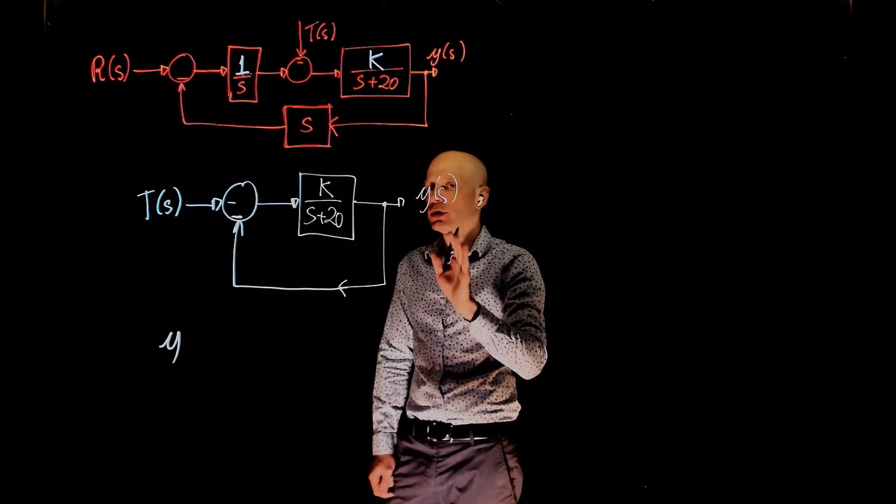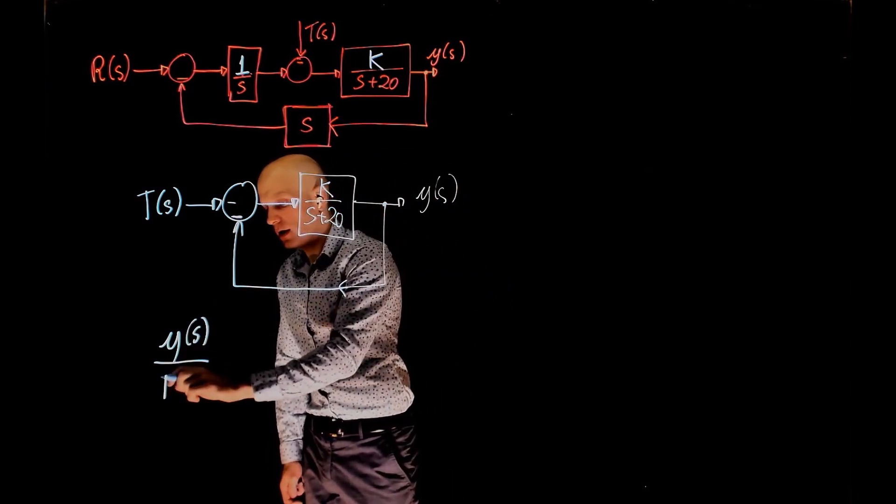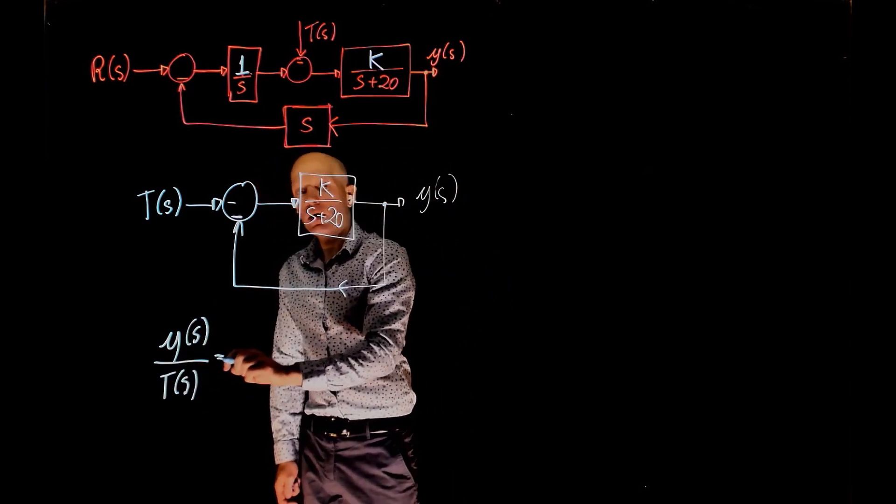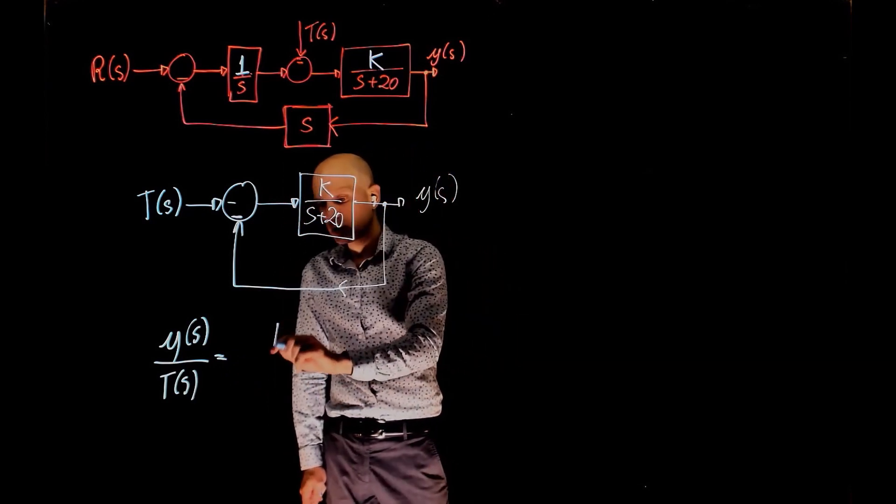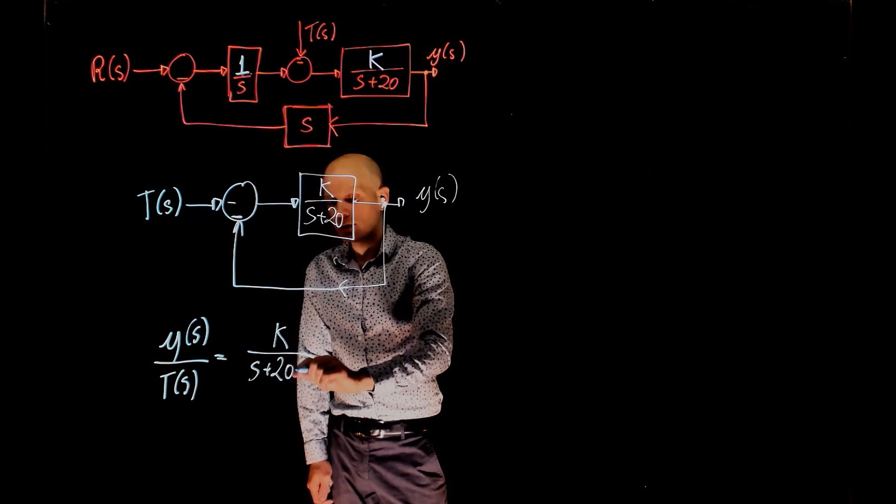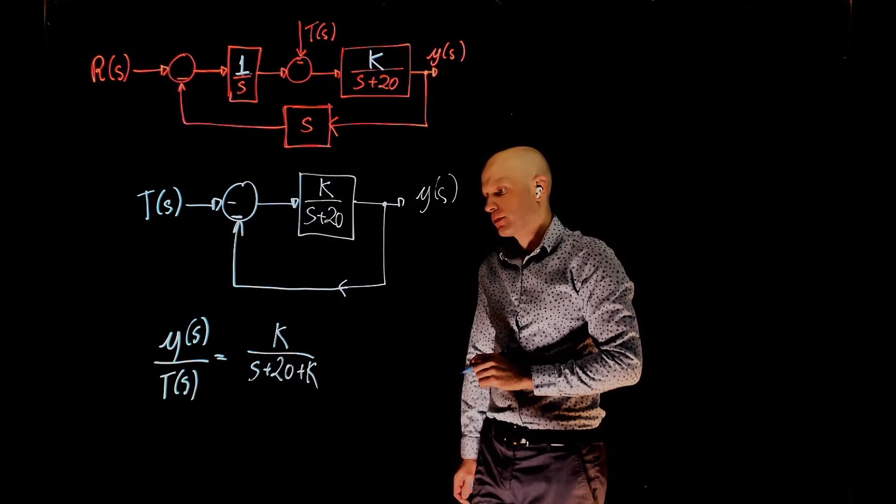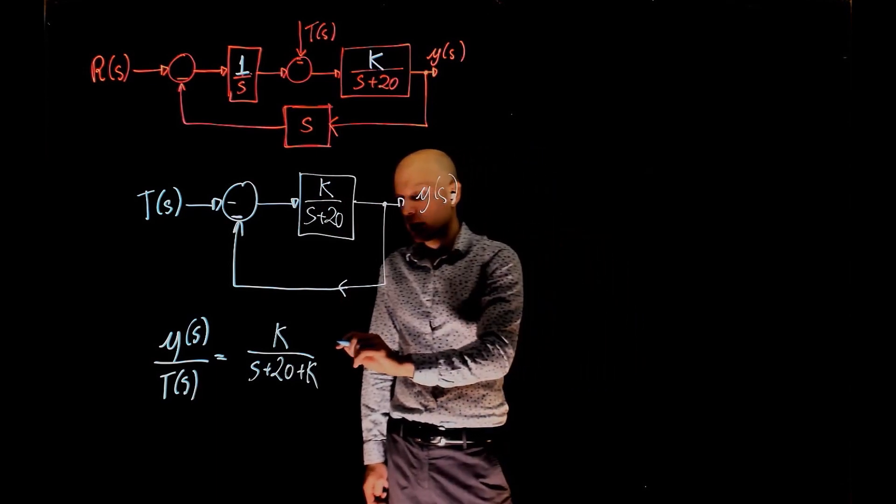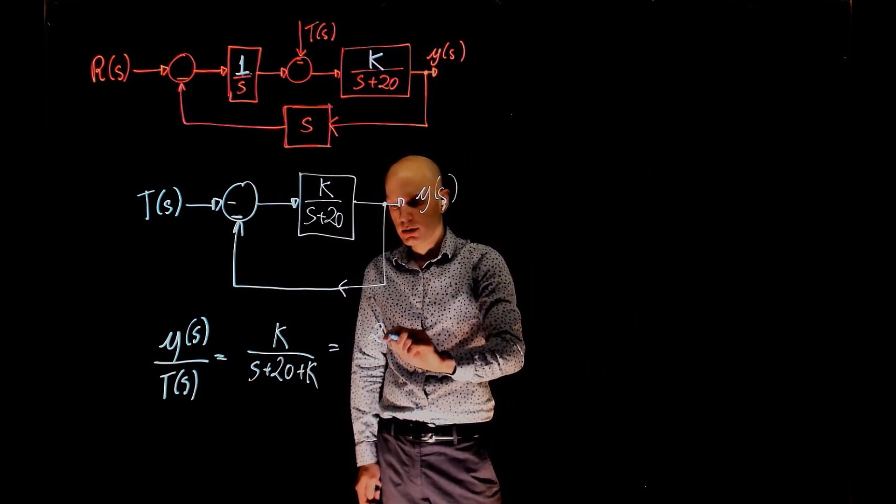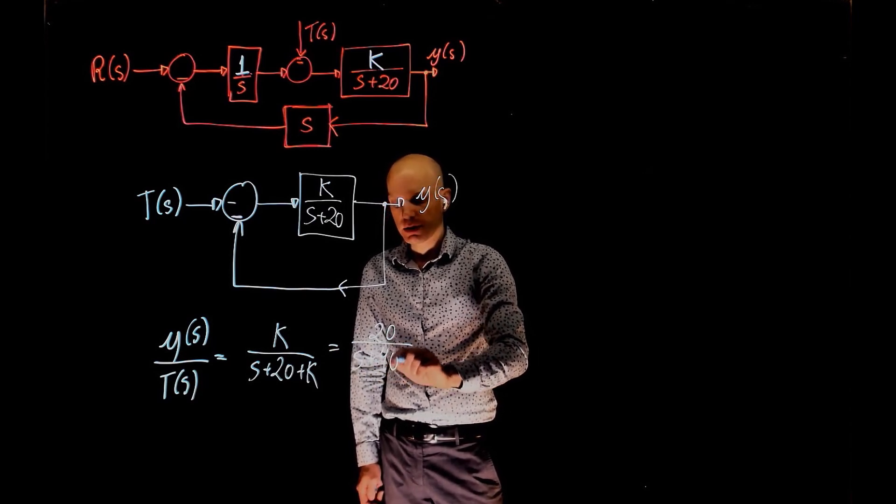Now the closed loop transfer function here is easy. y(s) divided by T(s) is k over (s + 20 + k). And when k is equal to 20, this is 20 divided by (s + 40).